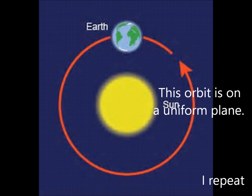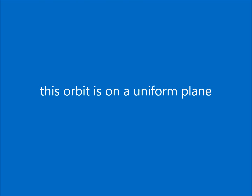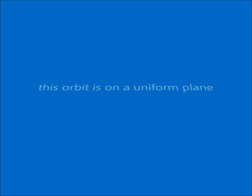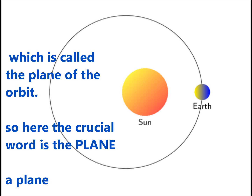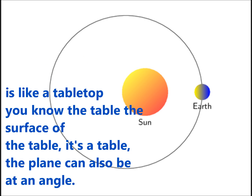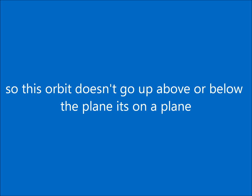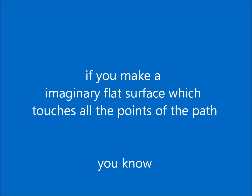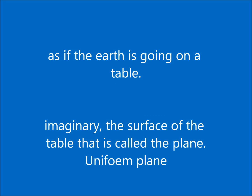This orbit is on a uniform plane, which is called the plane of the orbit. A plane is like a tabletop — the surface of the table is a plane. A plane can also be at an angle. This orbit doesn't go up above or below the plane; it stays on it. If you make an imaginary flat surface touching all the points of the path, it's as if the earth is going on an imaginary table surface — that is called the uniform plane of the orbit.